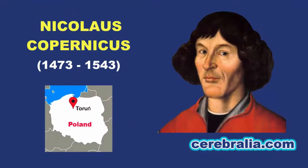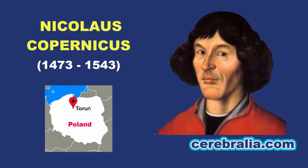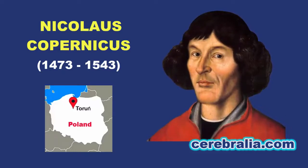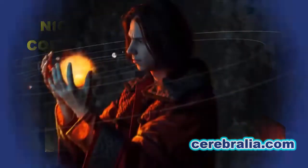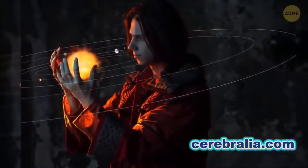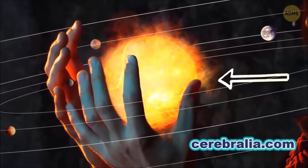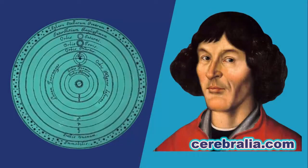It wasn't until the 16th century that Polish astronomer Nicolaus Copernicus challenged the geocentric model and proposed the heliocentric model of the universe. He believed that the Sun was the real central point of the universe. Copernicus claimed that Earth revolves around the Sun, not the other way around.